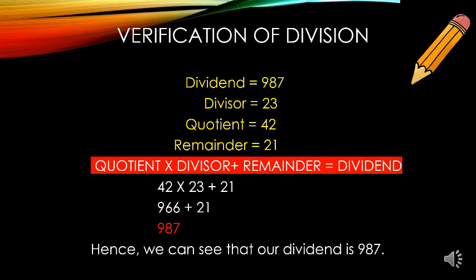Now let us verify our division. Dividend is 987, divisor is 23, quotient is 42, and remainder is 21. According to the division algorithm, quotient multiplied by divisor plus remainder equals dividend. When we multiply 42 by 23, we get 966. Now add 21 to it and we get 987. Here we can see that 987 is exactly the same dividend that we took. Hence we verified our division.